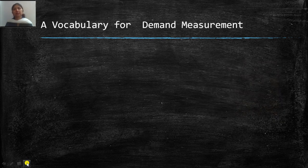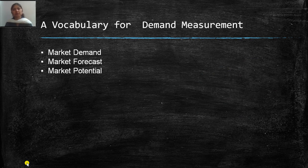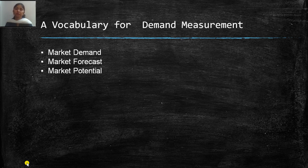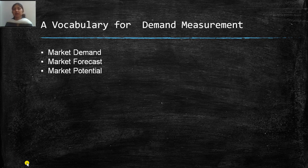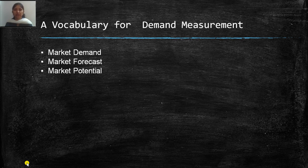Now let's review vocabulary for demand measurement. Market demand is the total number of customers or volume of product bought by a customer group in a defined geographical area, time period, marketing environment, and marketing program. Market forecast is the demand at a particular level of marketer expense. Market potential is the upper limit of the market beyond which any expenditure would not increase demand.